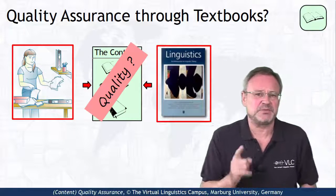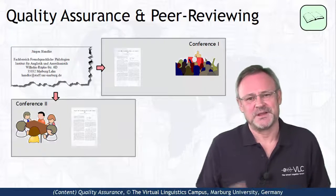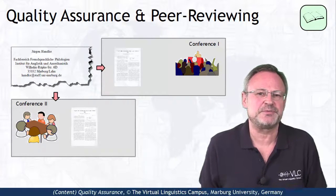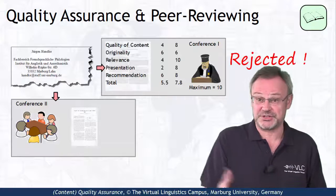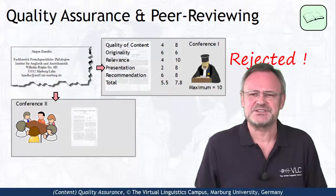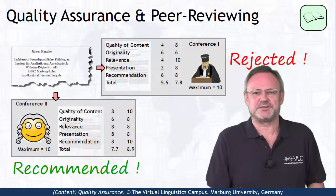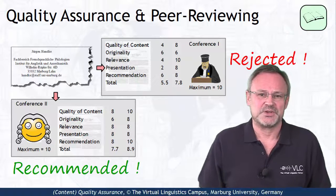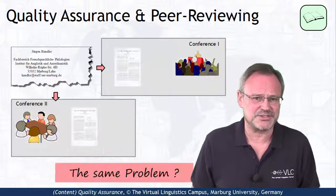But even peer reviewing can be problematic. Let me tell you a true story. Recently, I submitted the same paper to two different conferences for peer reviewing. The group of referees of one conference rejected the paper for what they called reasons of scientific outdatedness. And the other group of referees was thrilled by its accuracy and today's relevance and accepted the paper. So even traditional paper-based peer reviewing can be seen as problematic to a certain extent.